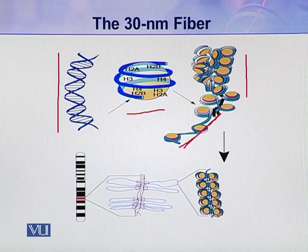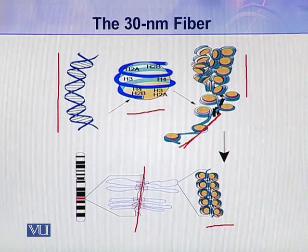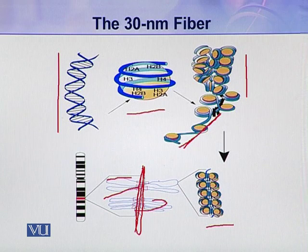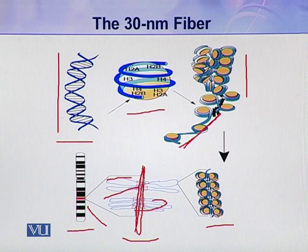This is achieved either by the zigzag model or by the solenoid model to produce the 30 nanometer fiber. In the next level of organization, this 30 nanometer fiber makes loops around a nuclear scaffold. This scaffold then contributes to forming the chromosome. So starting from the DNA molecule, there are several levels of organization to ultimately acquire a chromosome.